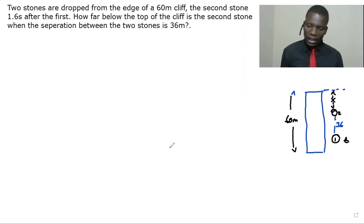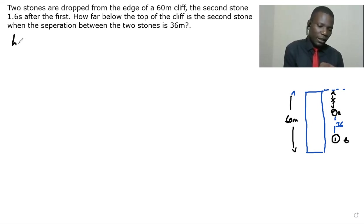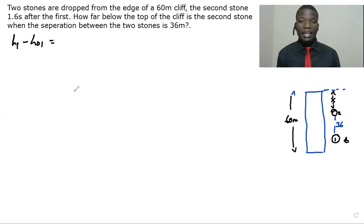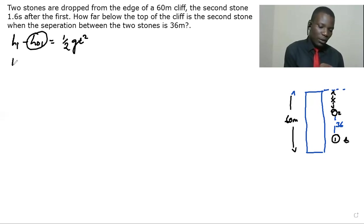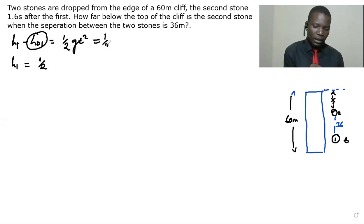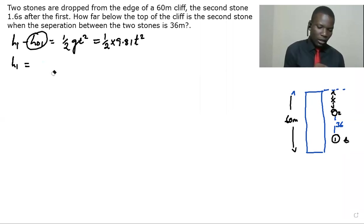We have to write the equations of motion for these two stones. For the first stone, this is a free-fall kind of motion, so there is no initial velocity. We have h1 equals half g t squared. Since g is 9.81, this gives us h1 equal to 4.91 t squared. This is our first equation.